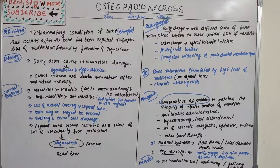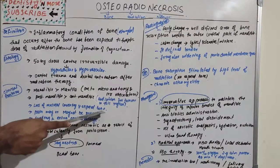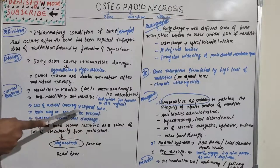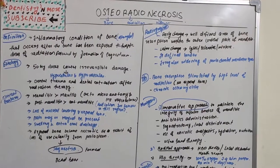Looking at clinical features, osteoradionecrosis is most commonly seen in the mandible rather than the maxilla, because of the microanatomy, less vasculature in the mandible, and loss of mucosal covering. There will be exposed bone, which is the most striking feature of osteoradionecrosis. Pain may or may not be present, and there might be swelling and extra-oral drainage.